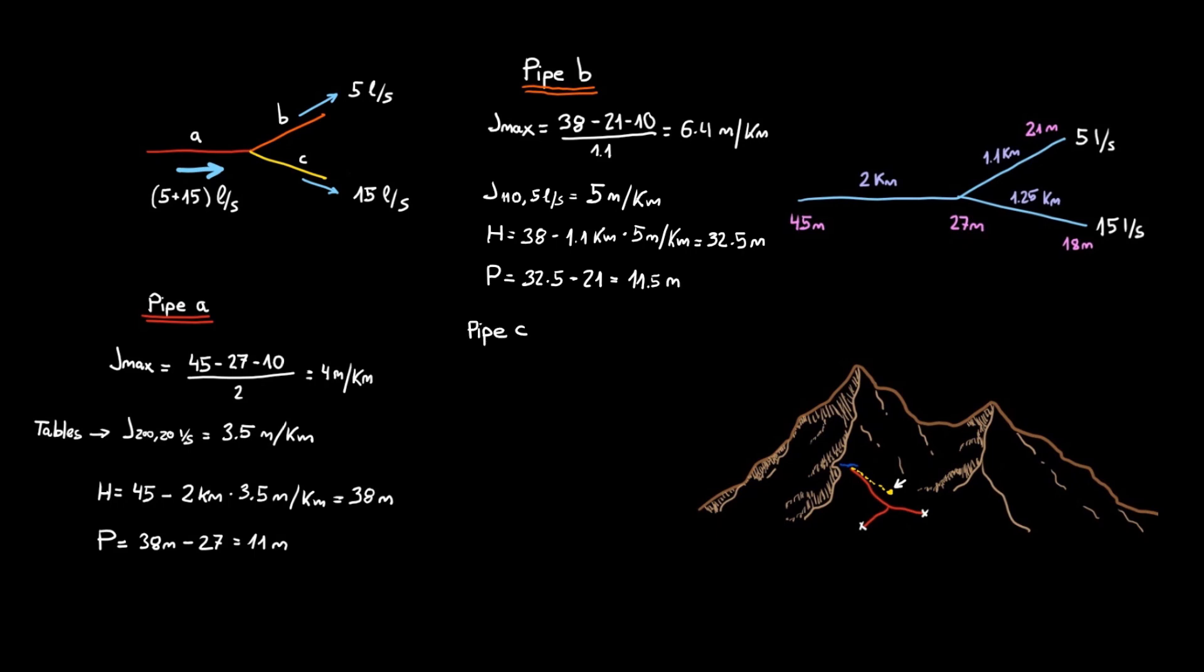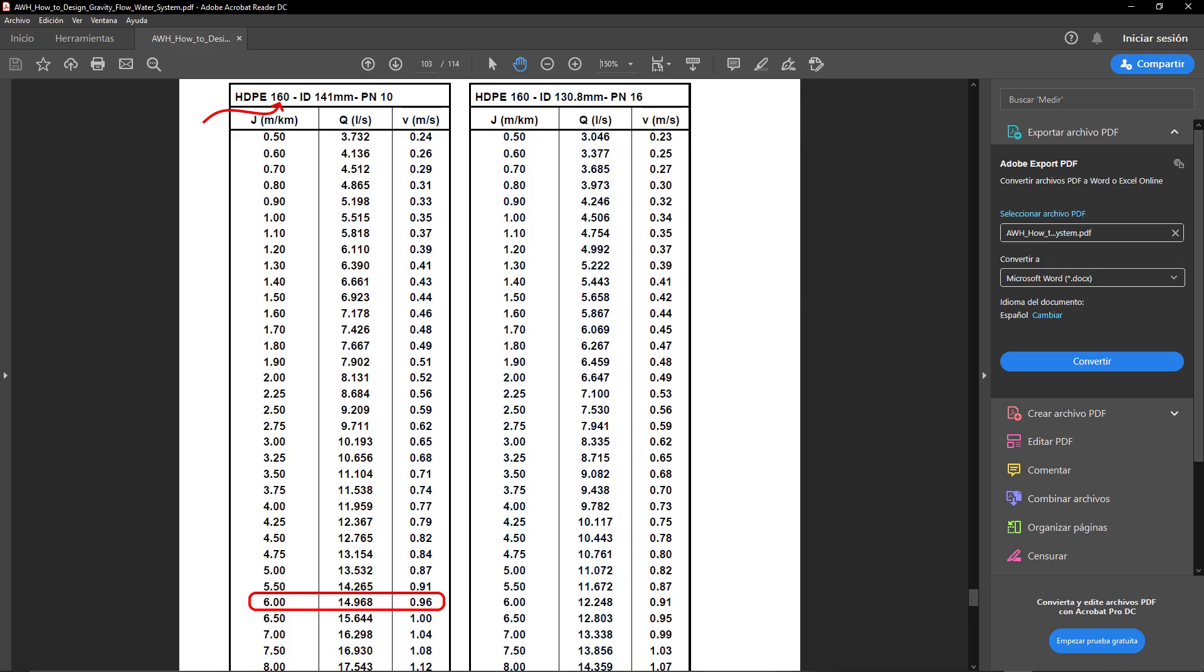Pipe C repeats the process. We need to find head loss values below 8 meters per kilometer for 15 liters per second. The closest value is for 160 millimeter pipe. We then find head and pressure values.